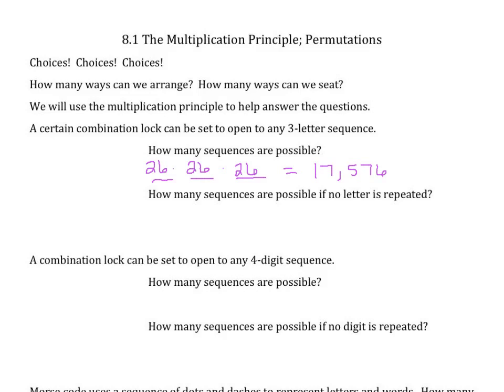How many sequences are possible if no letter can be repeated? We still have three options. We have 26 in the first set, but if we can't repeat a letter, we would only have 25 options in the middle and then 24 options in the last set, giving us 15,600 sequences when multiplying.